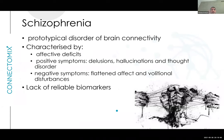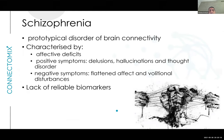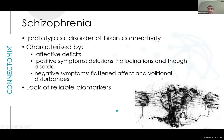The next condition, covered from a scientific interest standpoint, is schizophrenia — a prototypical disorder of brain connectivity. Wernicke first described it as a connectivity disorder in 1901, believing it was a problem with association fibers. It is characterized by affective deficits; positive symptoms such as delusions, hallucinations, and thought disorder; and negative symptoms such as flattened affect and volitional disturbances.